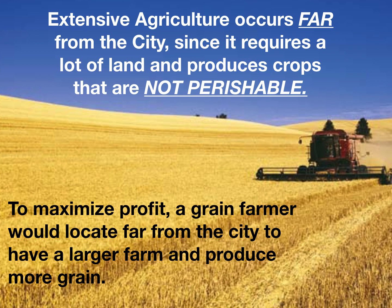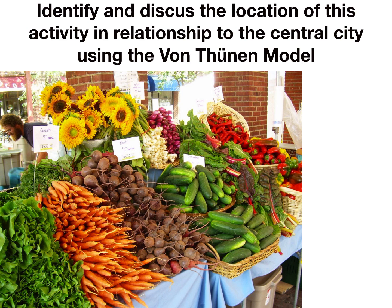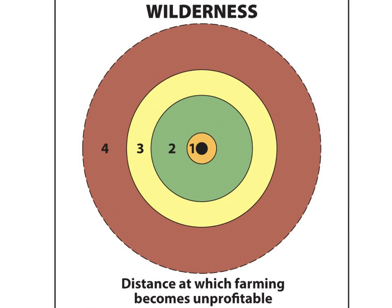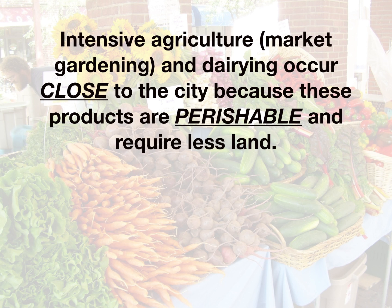The second FRQ question asks you to identify and discuss the location of market gardening using the von Thünen model. Looking at a picture of garden vegetables — lettuce, carrots, sunflowers, cucumbers, and kale — these would be located in the first ring, very close to the central city. The reason is that intensive agriculture and market gardening occur close to the city because these products are perishable and require much less land.